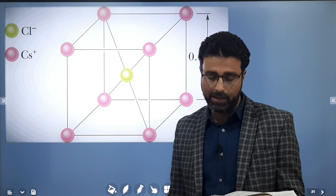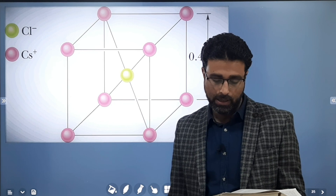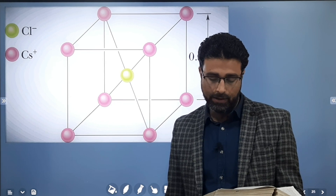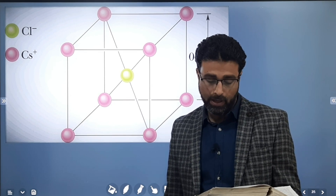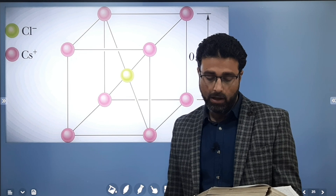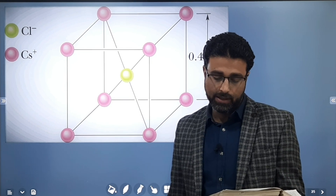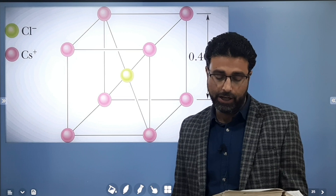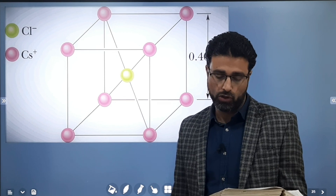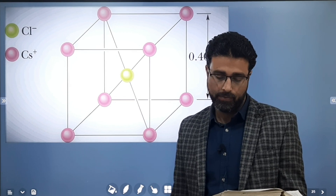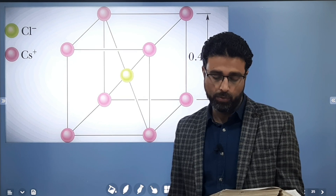The cesium ions are each deficient by one electron and the chlorine ion has an excess of one electron. Part A: What is the magnitude of the net electrostatic force exerted on the Cl⁻ ion by the eight Cs⁺ ions at the corners of the cube?